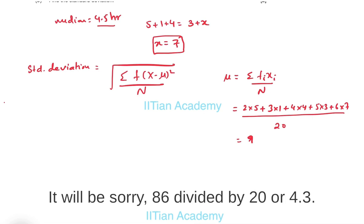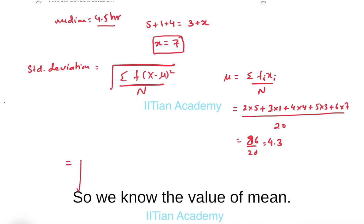So it will be 86 divided by 20 or 4.3. So we know the value of mean.